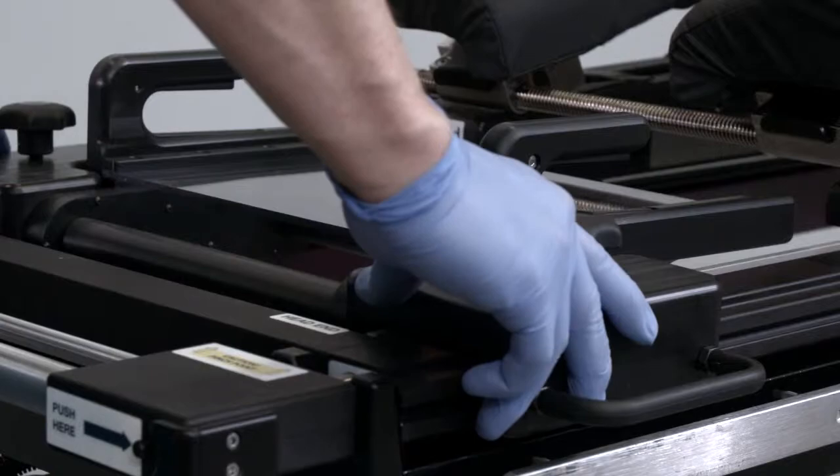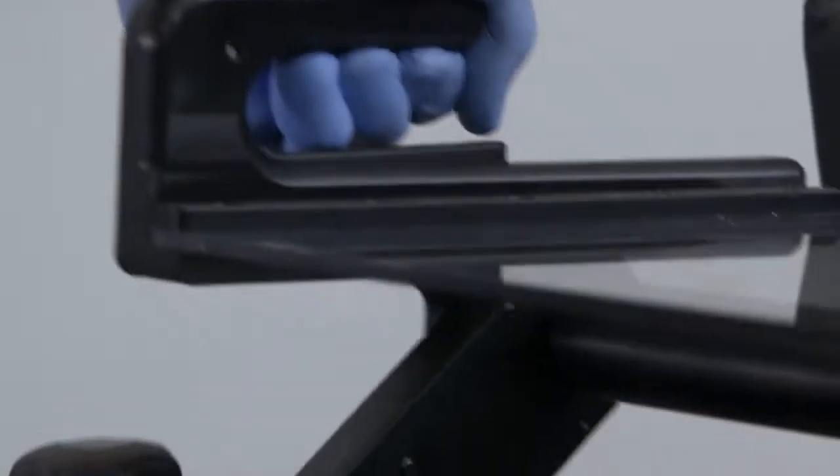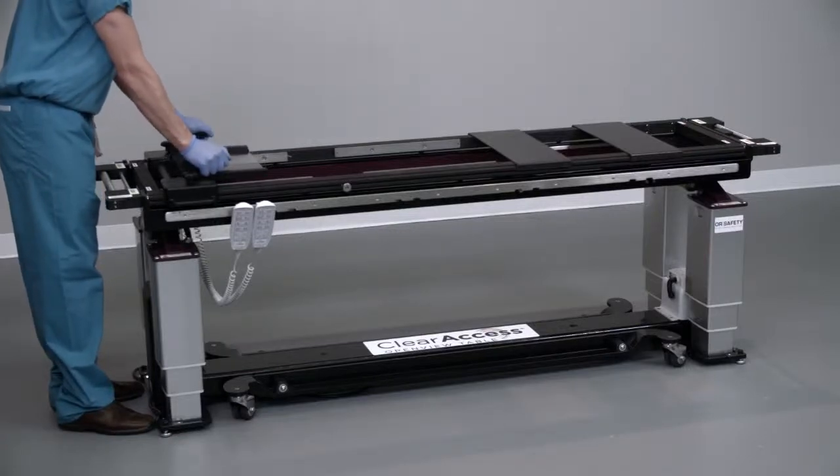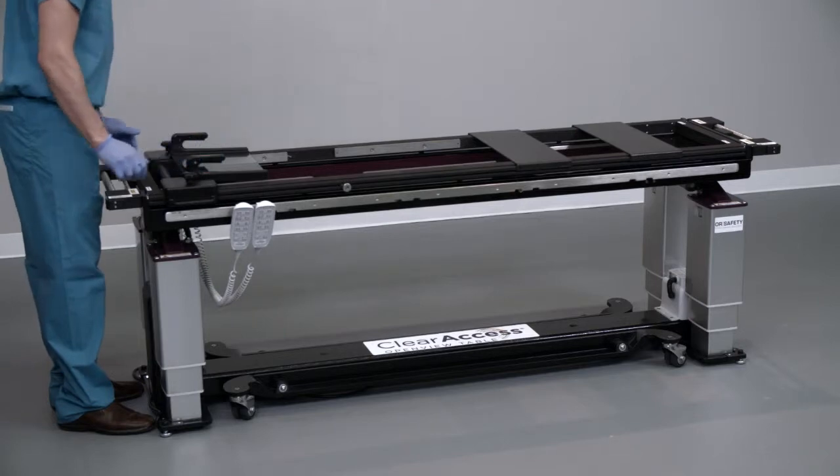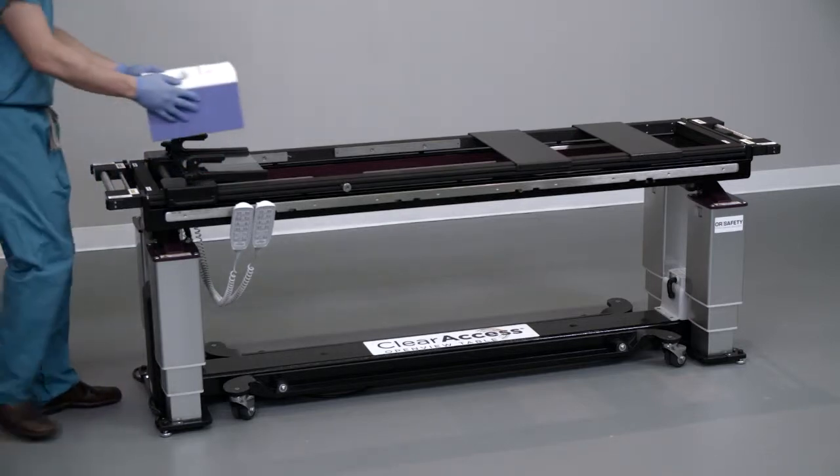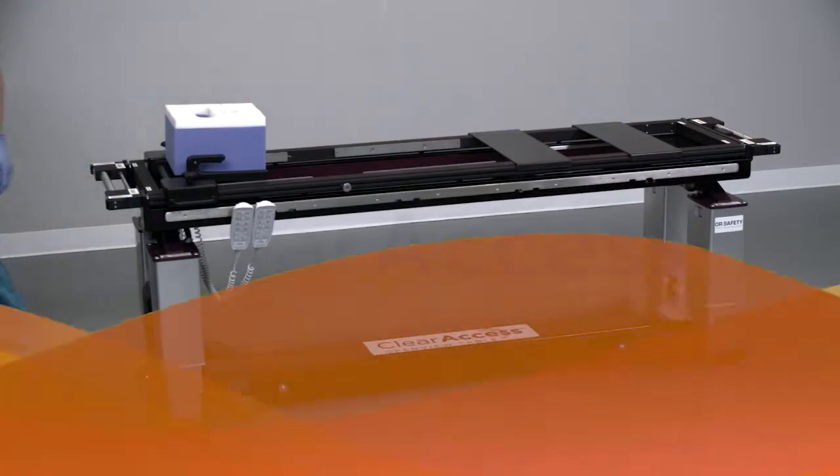Adjust the height and pitch of the support plate by grasping both control handles and squeezing firmly to release the lock before making any adjustments to the support plate. Release the control handles at the desired height and orientation of the support plate to automatically lock it in place. Install the desired face pillow on the support plate. The ClearAccess head support is compatible with the prone view system.